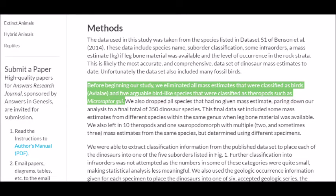To come to this conclusion, the article points out that it had to cut a large list of species from the dinosaur roster. Quote, Before beginning our study, we eliminated all mass estimates that were classified as birds, and five arguable bird-like species that were classified as theropods, such as Microraptor gi. Close quote.